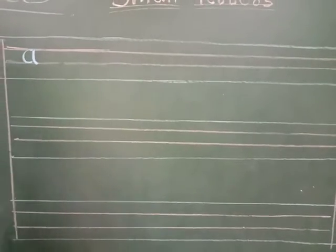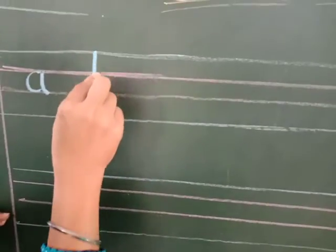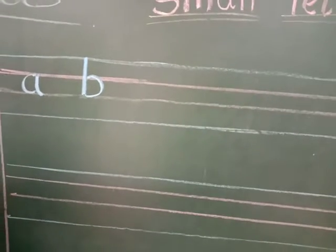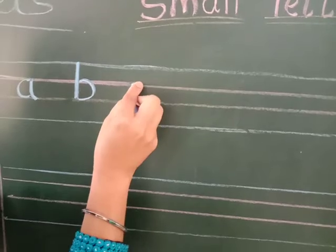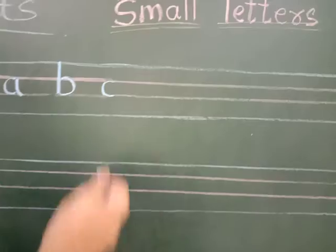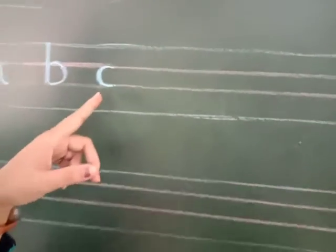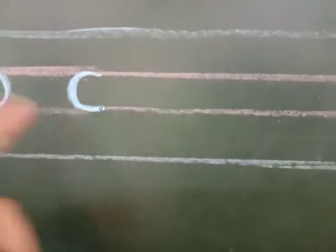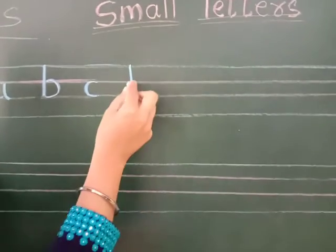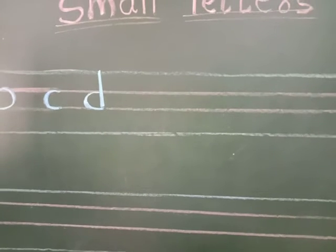So let us write now alphabet B — small b. Standing line, half circle. Small b. Then curve line — C, or you can say half circle, curve line. Small c. You can see how I have written — only in two lines. Then small d: standing line, curve line or a half circle. Small d.